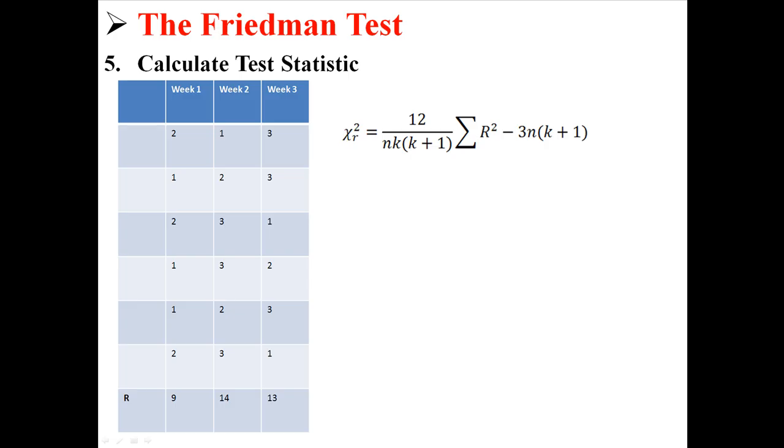Which is pretty easy because we know that n is 6, we know that k is 3. We just need to solve for the sum of all r-squared, which looks something like that. The sum of all r-squared is just 9-squared plus 13-squared plus 14-squared. And then we put in n and k, and suddenly the equation is pretty easy to figure out. You just put that in a calculator, and you find out that chi-squared equals 2.33.